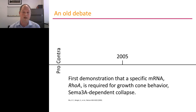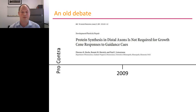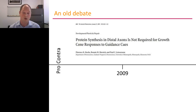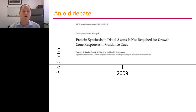A couple of years later, we found the first specific mRNA required for specific growth cone behavior — growth cone collapse in response to Semaphorin 3A. However, just to be very open about it, the debate is not yet settled. For example, in 2009, Paul Letourneau published an article in the Journal of Neuroscience finding that protein synthesis in distal axons is not required for growth cone responses. But I think by now the overwhelming evidence argues that local translation within axons is important for axon development, and possibly also for maintenance, degeneration, and certainly for regeneration.